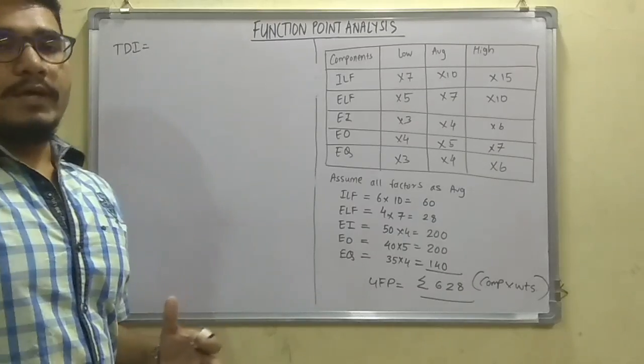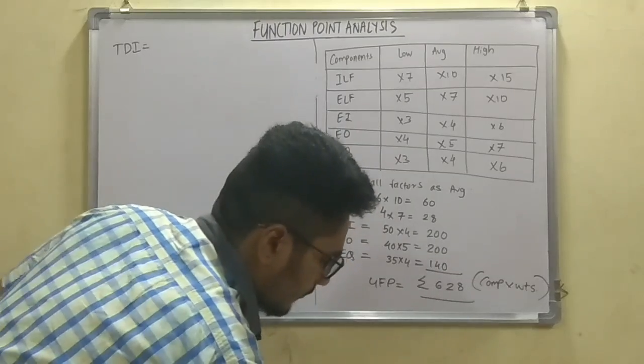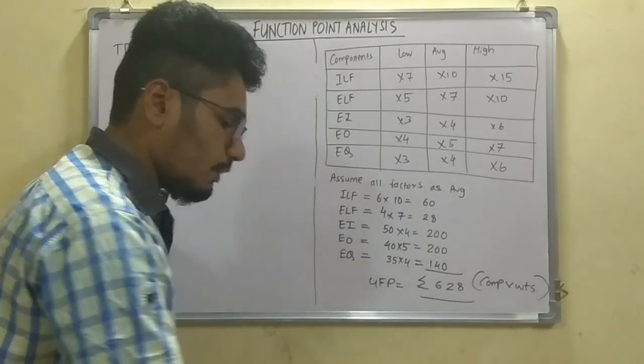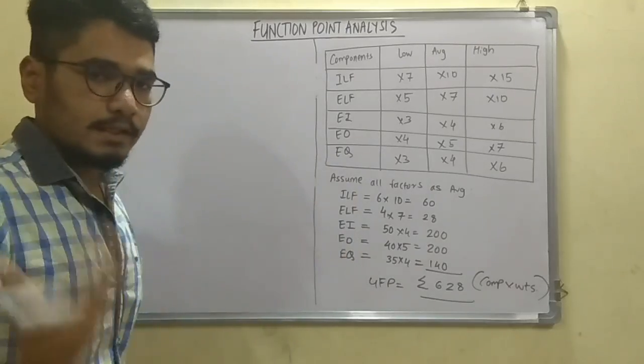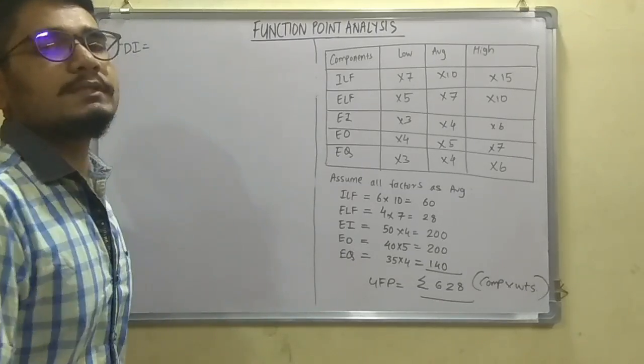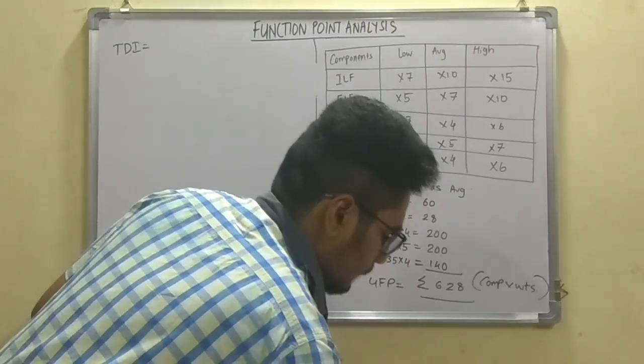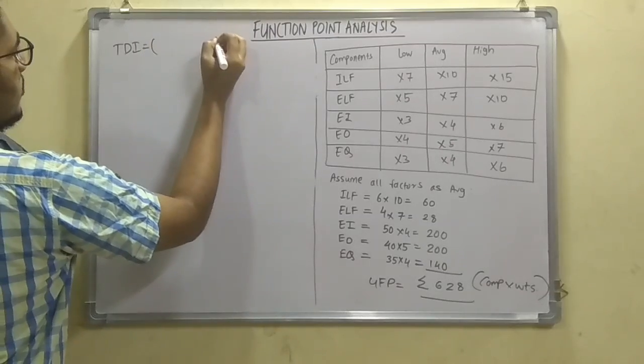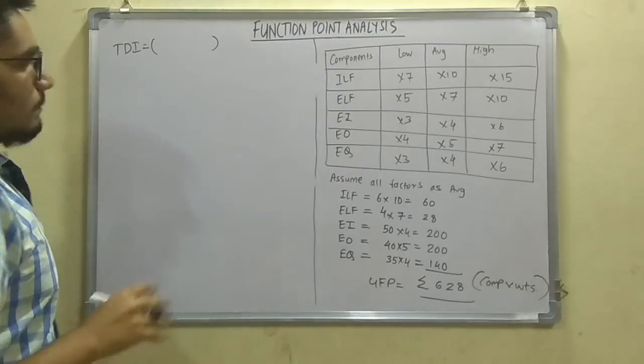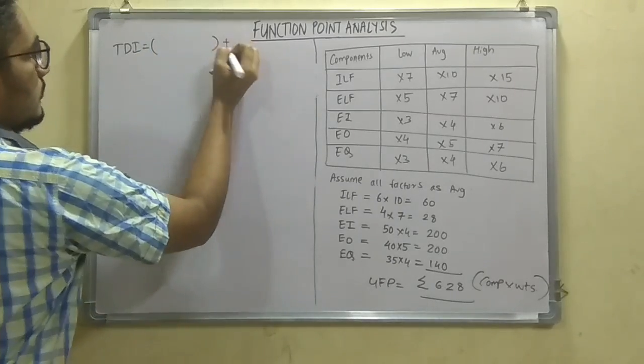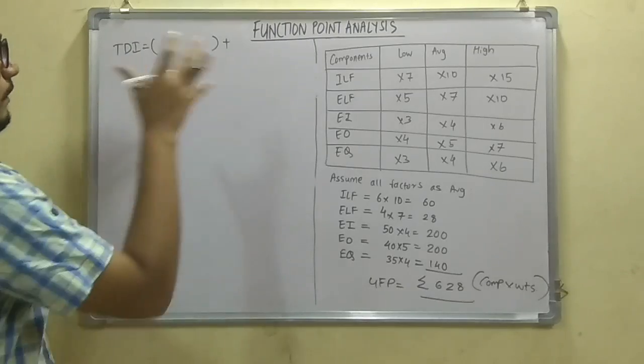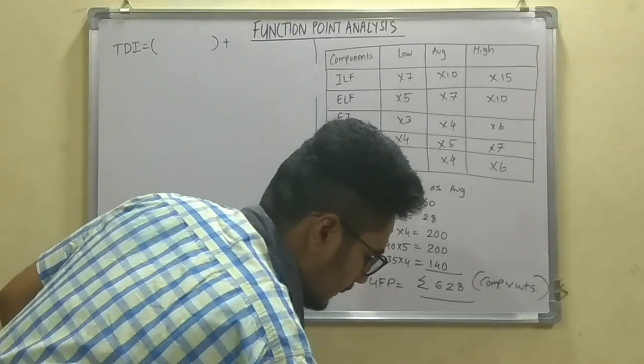So TDI is given as like we had the parameters in that which were the critical performance, the average end user efficiency, then moderate distributed data processing, and critical data communication. And they have also mentioned that assume all other GACs apart from this as incidental. So we have to calculate this. So TDI will be written in a bracket, meaning whatever 4 parameters which they have given, we will calculate based upon this, and plus the other GACs which we consider. So we will separate it out for simplicity purposes.